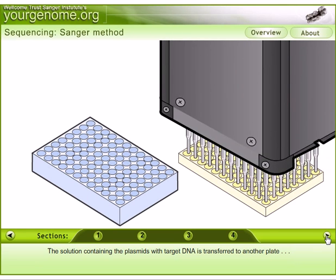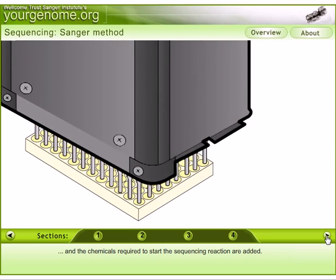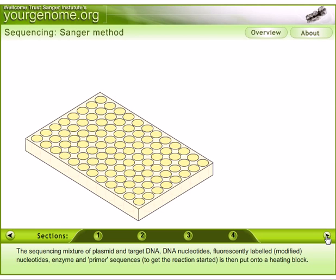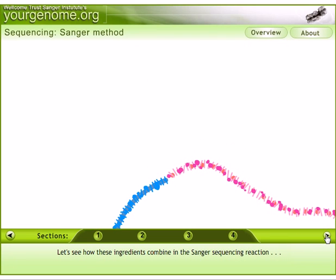All of these steps nowadays are done by robotics. The chemicals required to start the sequencing reaction are also added at this time. The sequencing mixture contains: plasmid with target DNA, DNA nucleotides (dNTPs — deoxyribonucleotides), fluorescently labeled or modified nucleotides, enzymes, and primer sequences to get the reaction started. The mixture is then placed onto heating blocks.